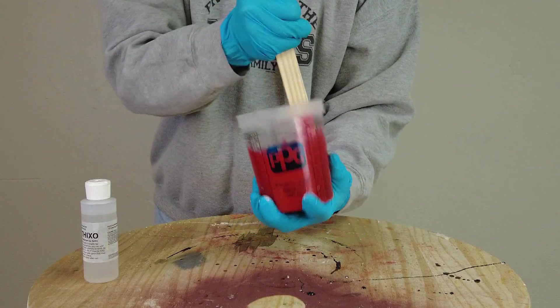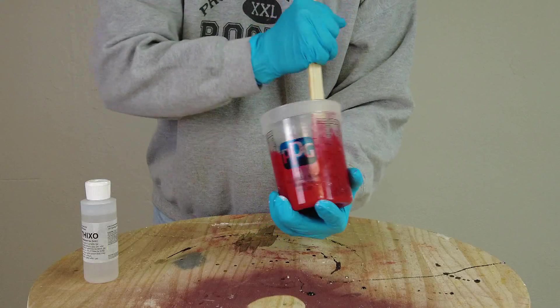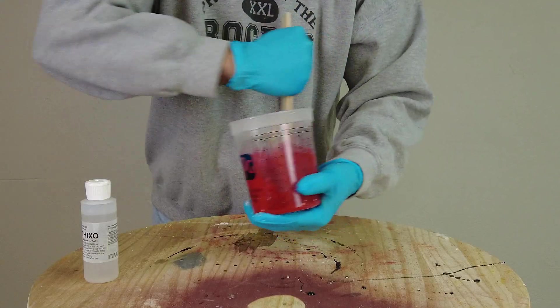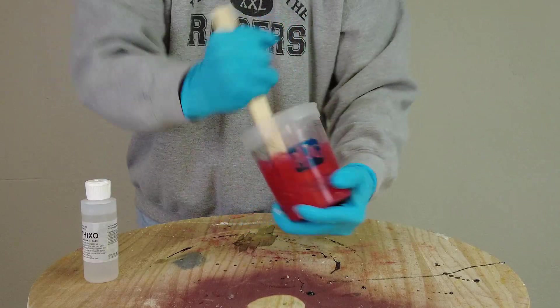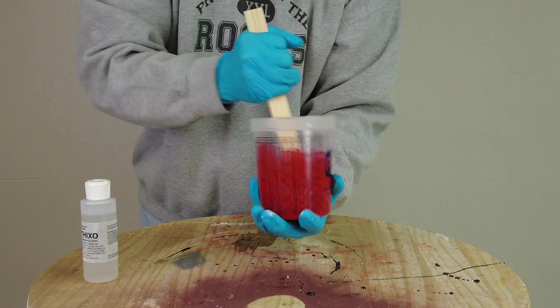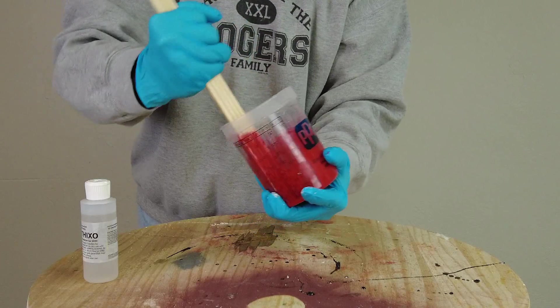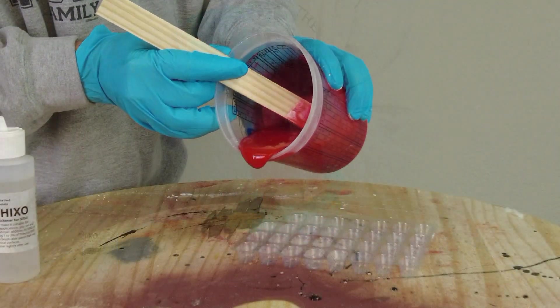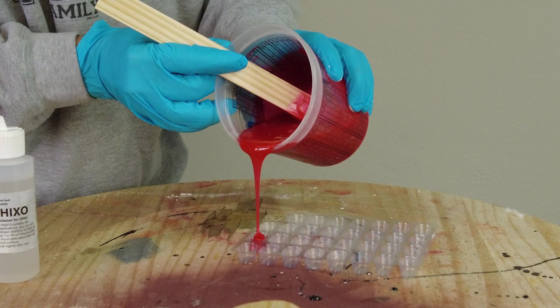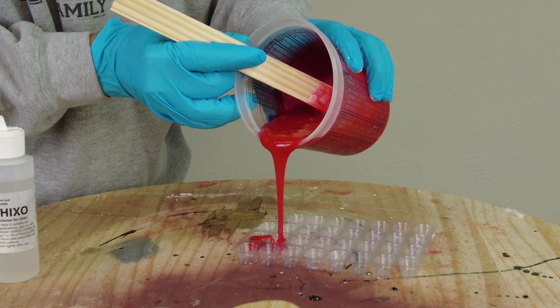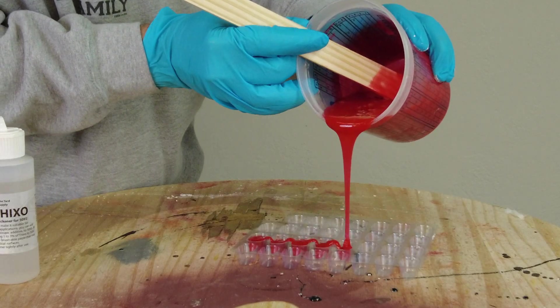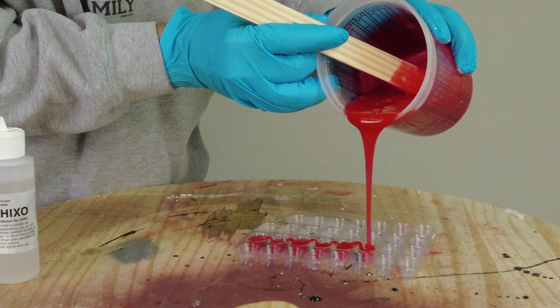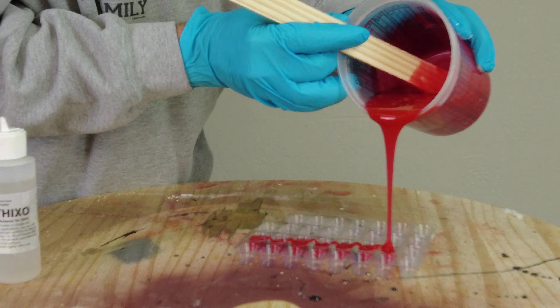Before we add our Thixo and before we start applying this to our model, we're going to pour up some keys. You might have seen this in some of our previous tutorials. The whole idea is we want a nice positive registration with our mother mold. We're going to pour this into some little key sheets. We have these available on our web store—they're just little blisters you can pour up. You don't need any mold release; the silicone is not going to stick to these.